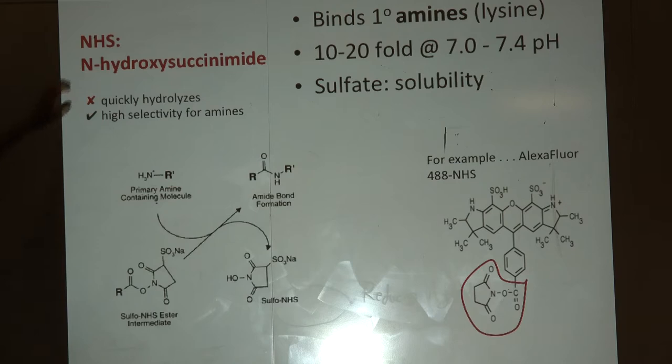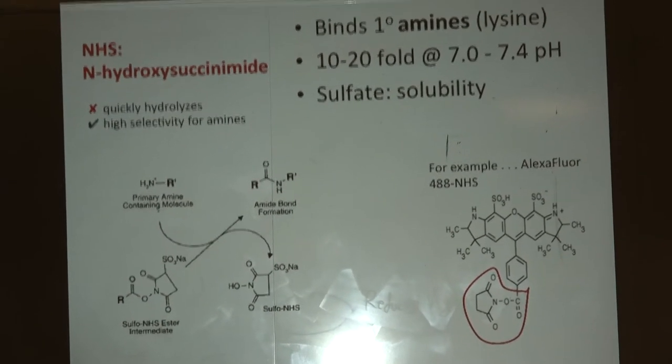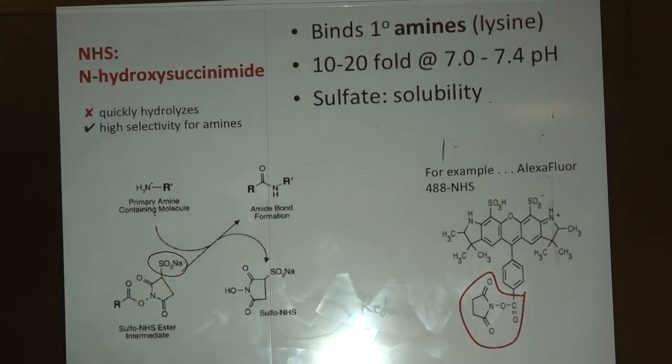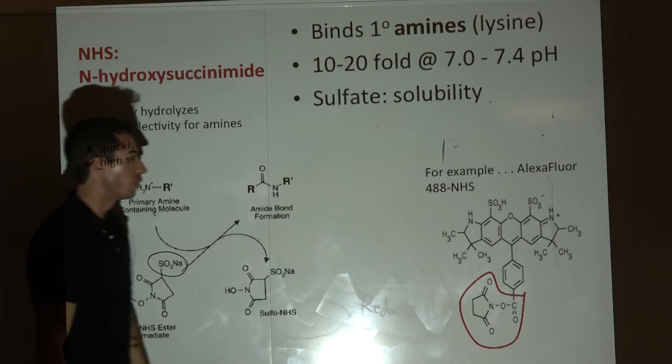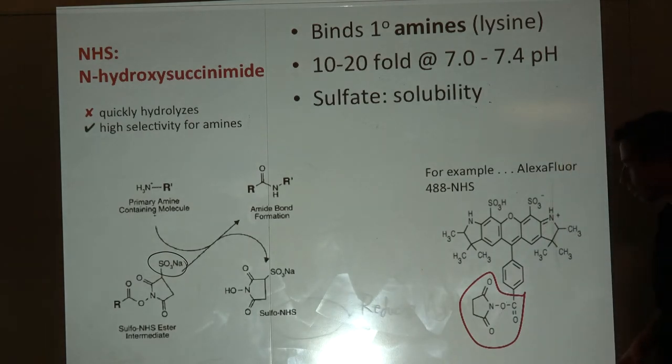First is NHS, N-hydroxysuccinimide. This is one of the most popular and well-established reactive groups in chemistry. It specifically binds to primary amines. You add this in at 10 to 20 fold excess at biological pH. Sometimes people include a sulfate group to increase solubility - you'll see NHS or sulfo-NHS.